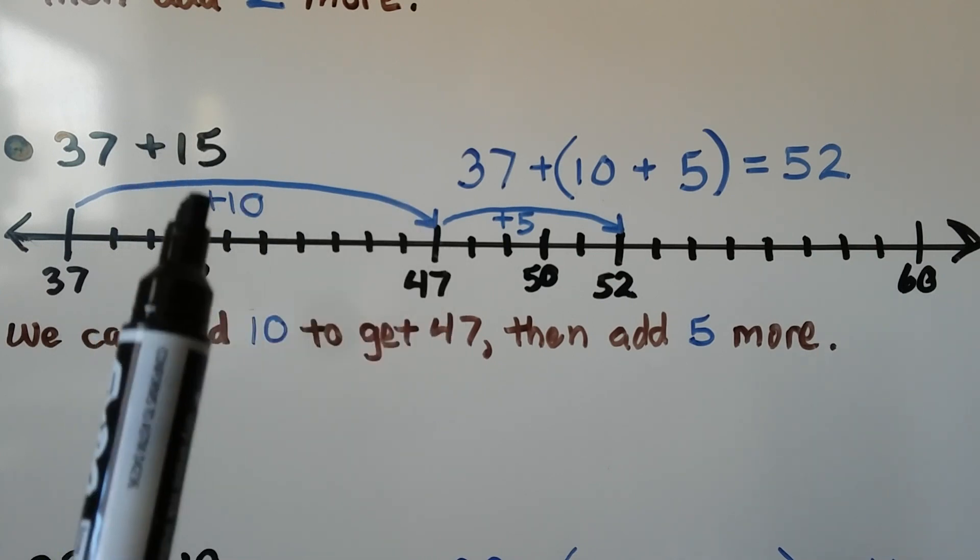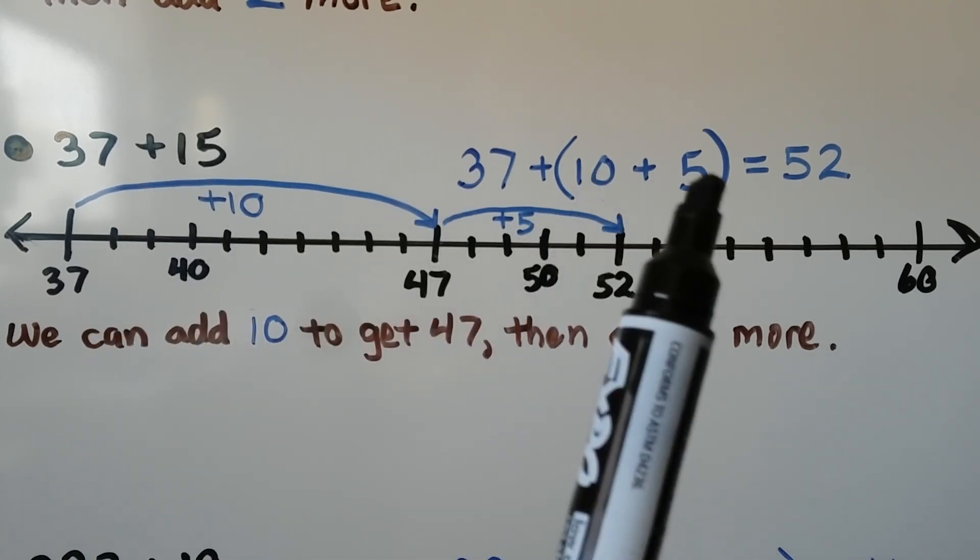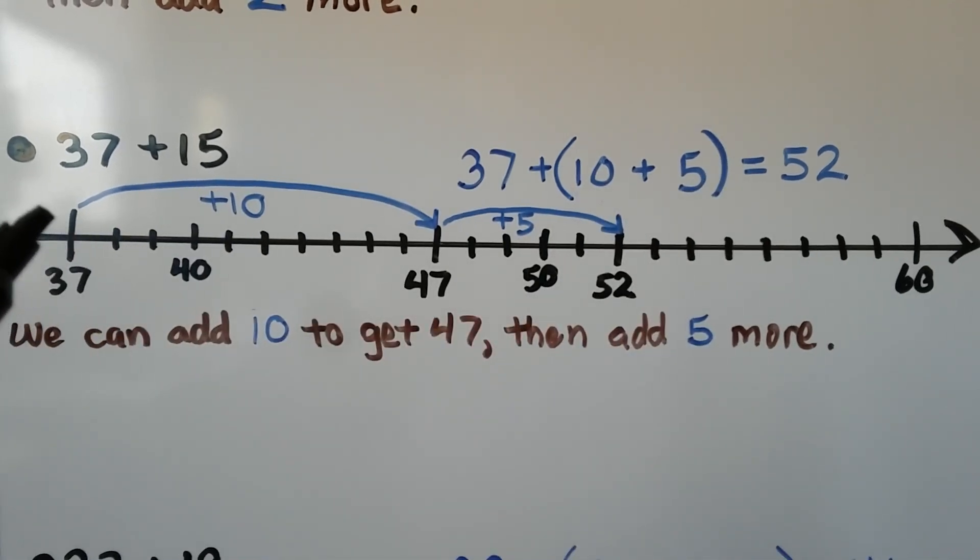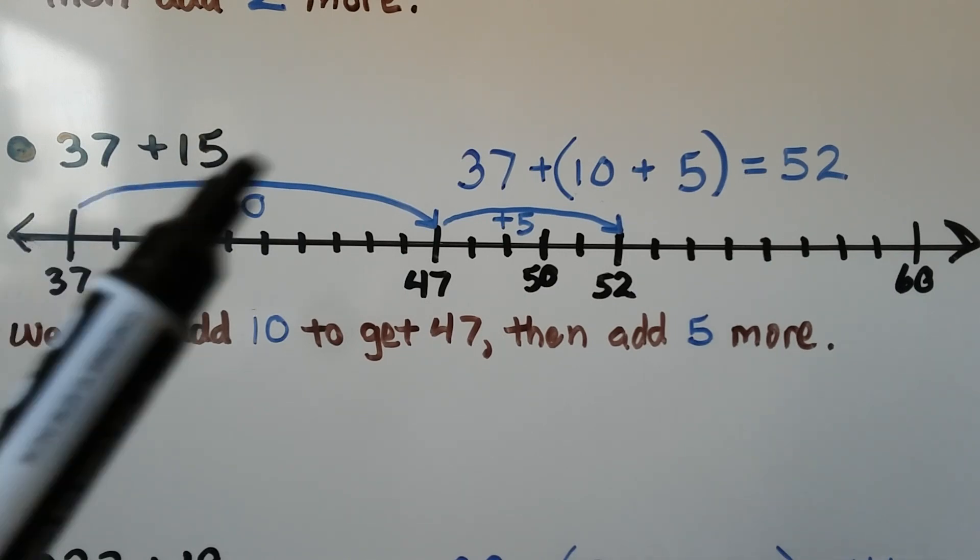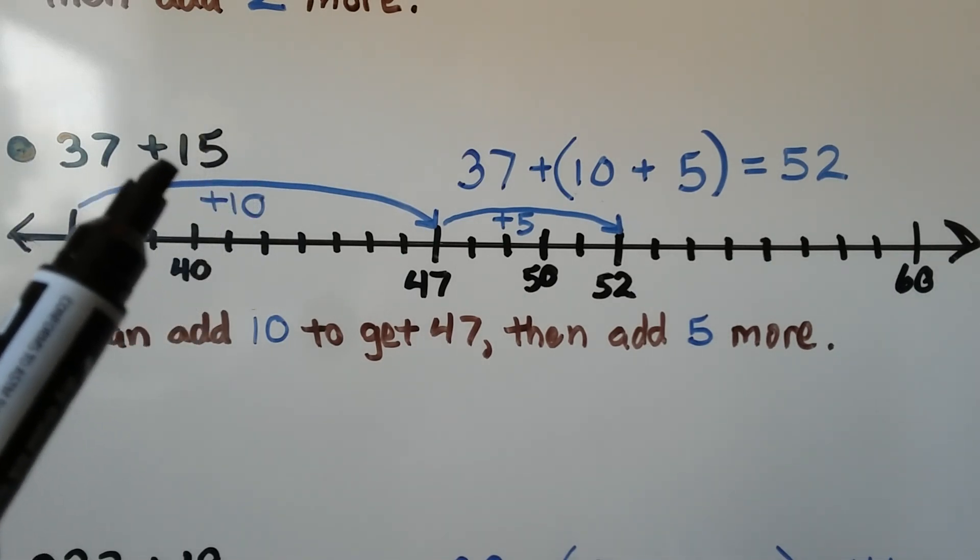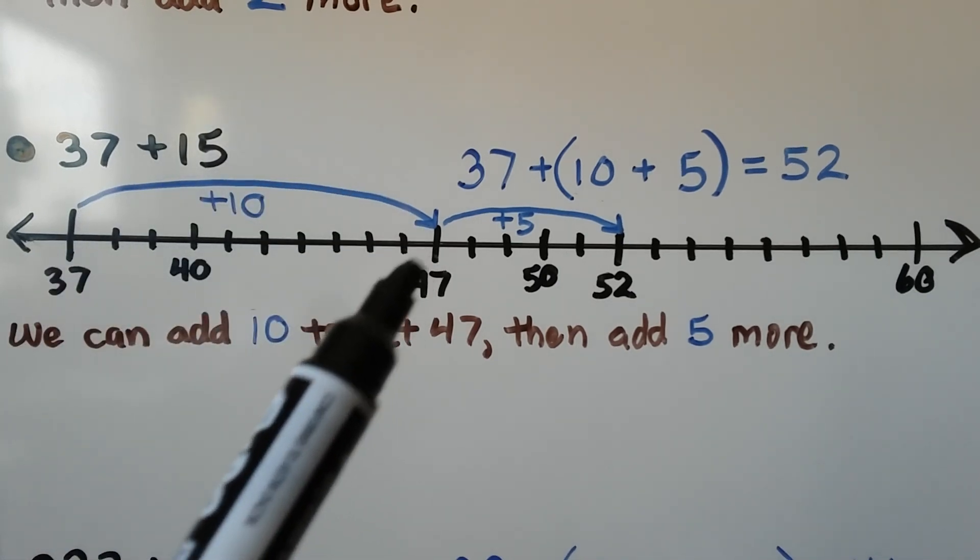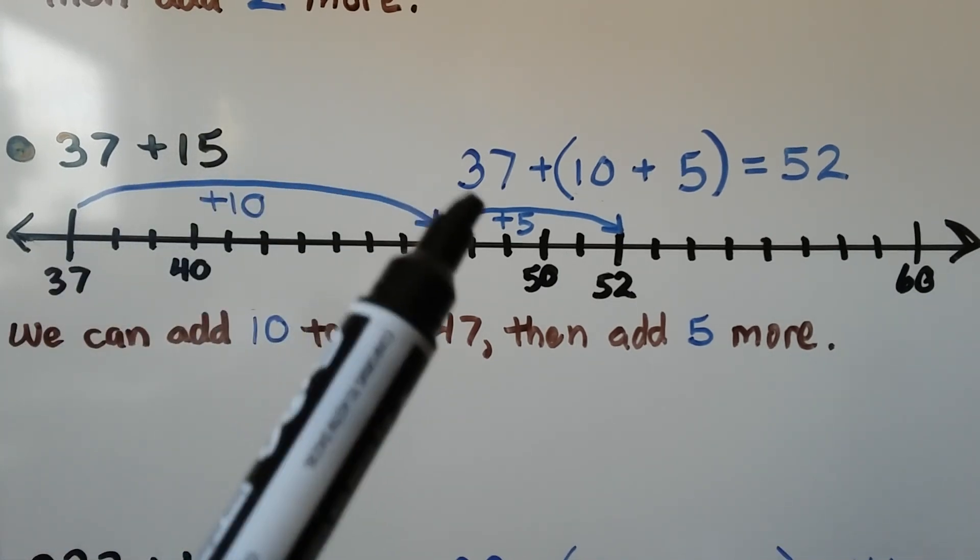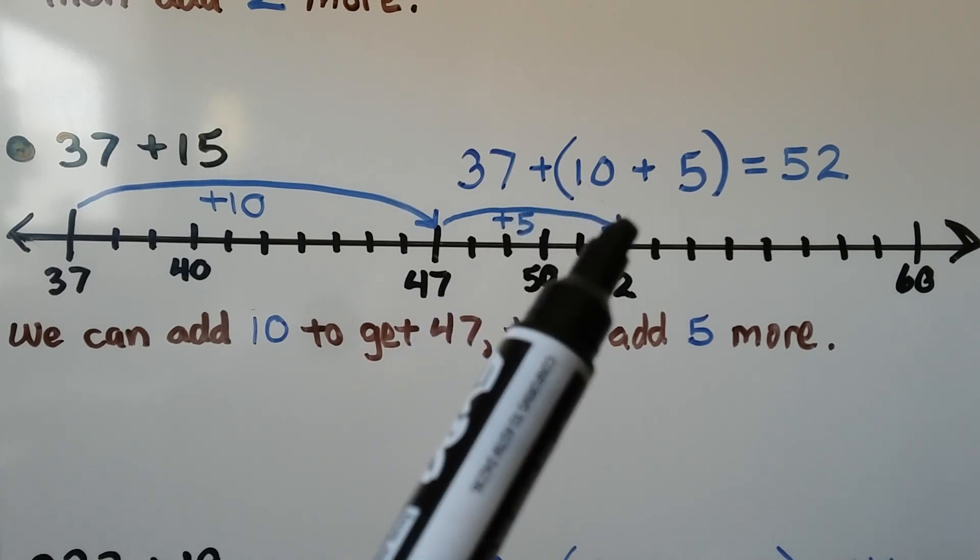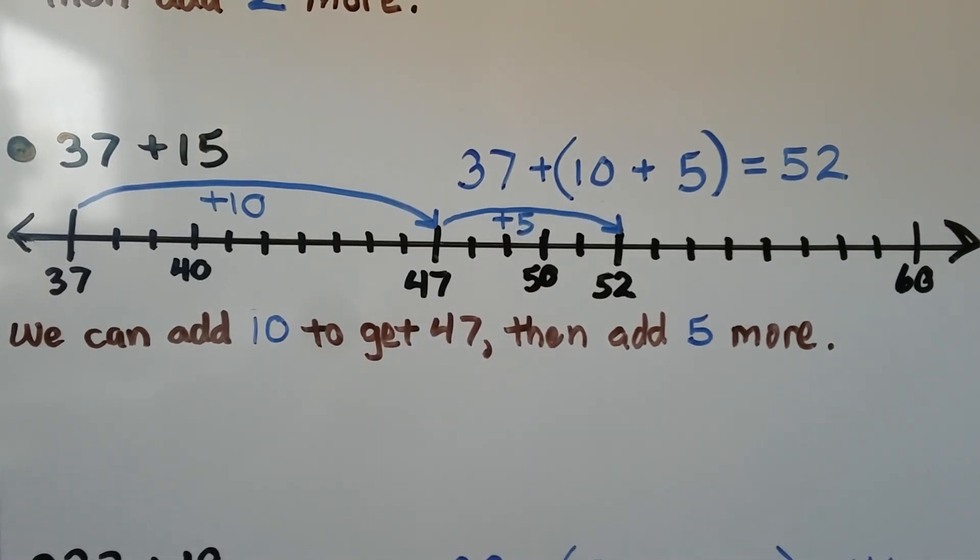We could also look at it as breaking the 15 into a 10 plus 5. We start at the 37. We add this 10, this one 10 right here. That will bring us to 47. Then we count up 5 more. 48, 49, 50, 51, 52. So we add the 10 to get to 47, then just add 5 more.